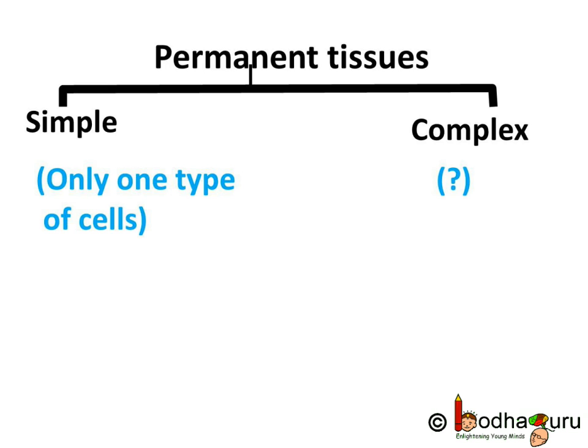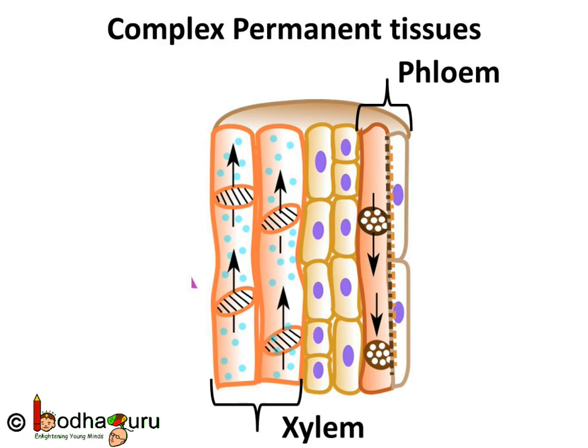Simple permanent tissues are made of one type of cells which look like each other. So what exactly are complex permanent tissues? There are other permanent tissues which are made of different types of cells. They together perform a specific task, hence they are counted under one tissue. These are called complex permanent tissues. Complex permanent tissues are made of more than one type of cells, and these cells coordinate to perform a specific task.